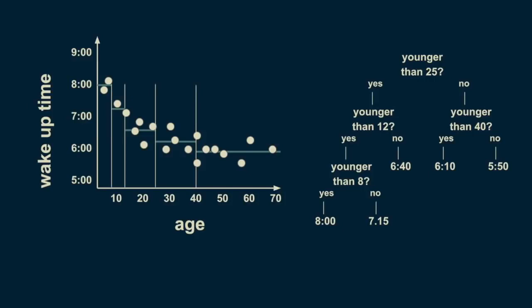We can also subdivide the 40 to 70 group on the 58-year line. Notice that we are getting to where we only have one or two data points per leaf of our tree. This is a dangerous condition and can lead to overfitting, which we'll talk more about in a minute. The resulting tree lets us make a numerical estimate depending on someone's age. If I need to estimate the wake-up time for a 36-year-old, I can start at the top of the tree: are they younger than 25? No — go to the right. Are they younger than 40? Yes — go to the left. The estimate then becomes 6:10 a.m. The structure of the decision tree lets you sort people of any age into their respective bin and make an estimate about their wake-up time.